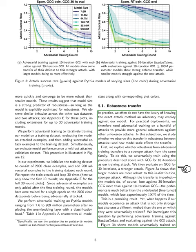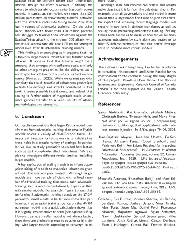We also consider what happens when our models face an attack that is not only stronger but also employs a different method than the one used during adversarial training. We explore this by training against the random token attack and then evaluating against the GCG attack. Our findings indicate that models trained against random token do perform better than those that are undefended, although the improvement is less pronounced. The degree of transfer varies significantly across different models. Specifically, models with more than 100 million parameters demonstrate strong transfer capabilities, with the attack success rate dropping below 25% after just four rounds of adversarial training. In contrast, models with fewer than 100 million parameters struggle to transfer their robustness, with the success rate remaining around 70% even after 10 rounds.